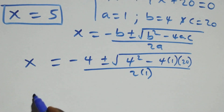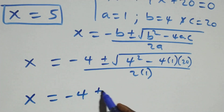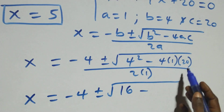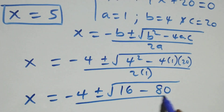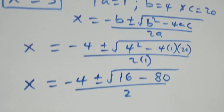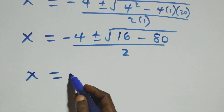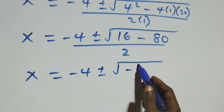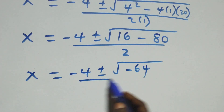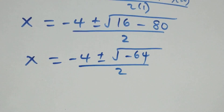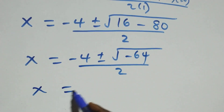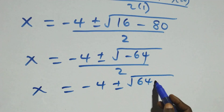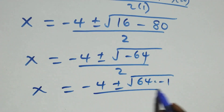This becomes x equals minus 4 plus or minus square root of 16 minus 80, all over 2. That gives square root of negative 64, which we can write as square root of 64 times negative 1, all over 2.